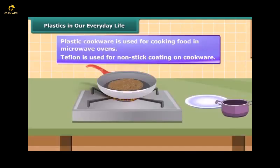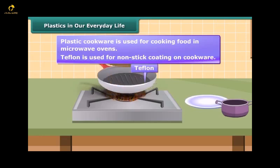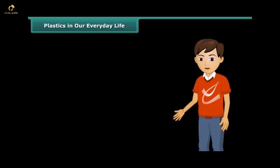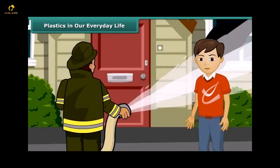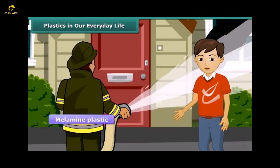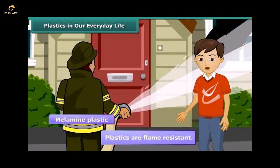Have you ever noticed the frying pan for cooking dosa? You'd have seen a black coating on it. It is teflon, which is a special plastic on which oil and water do not stick. Thus it is used as non-stick coating on cookware. You would be amazed to know that there are also fireproof plastics. The uniforms of firemen have coating of melamine plastic to make them flame resistant.